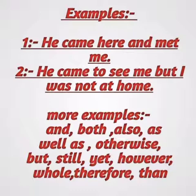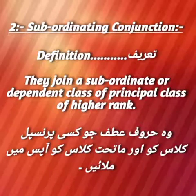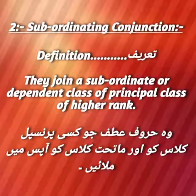Examples of coordinating conjunctions are: and, both, also, as well as, otherwise, but, still, yet, however, while, therefore, and then. The next type is subordinating conjunctions. A subordinating conjunction joins a subordinate or dependent clause to a principal clause of higher rank. In coordinating conjunctions, sentences are of equal rank, but in subordinating conjunctions, the dependent clause is joined to a principal clause of higher rank — this is the key point.